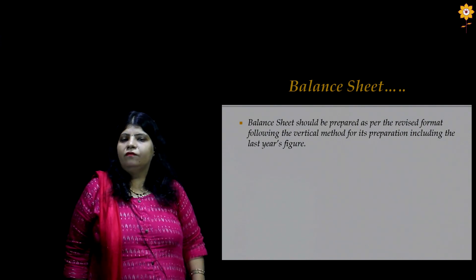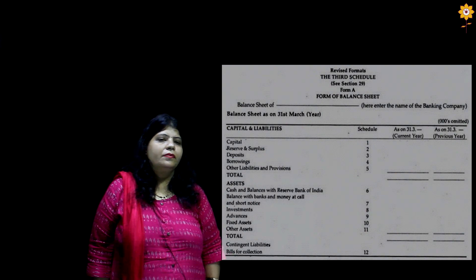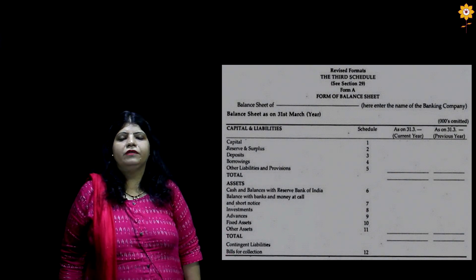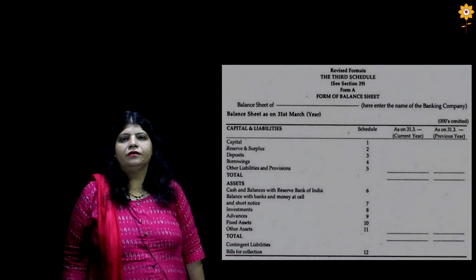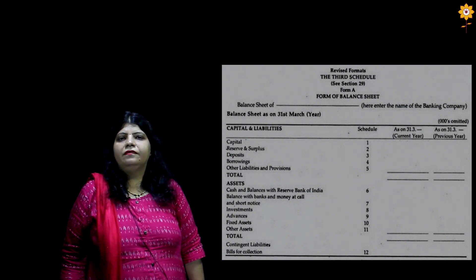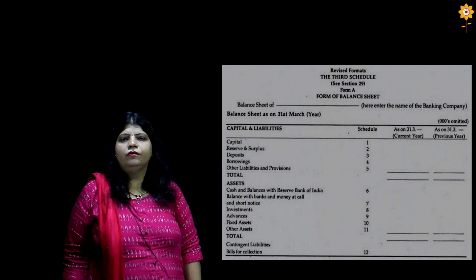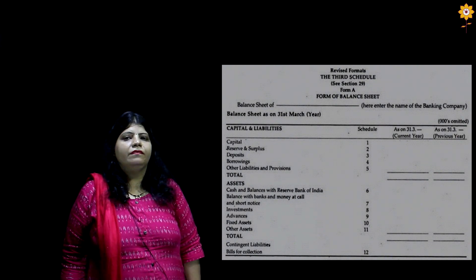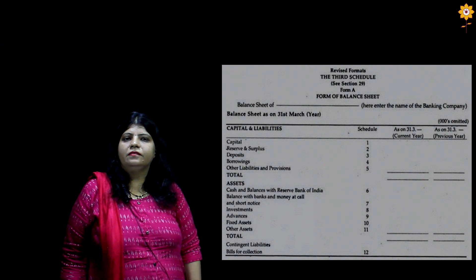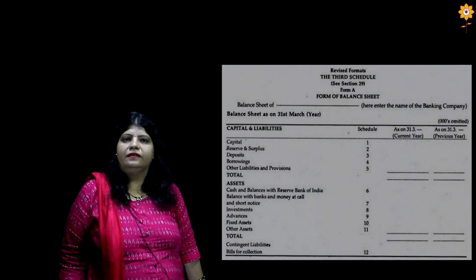The balance sheet is prepared in Form A in the vertical format. The basic fundamentals behind preparing the balance sheet are going to be the same — it will be divided into two parts. The first part is liabilities and the second part is assets.